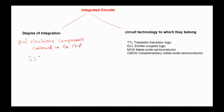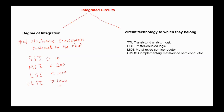In small-scale integrated circuits, the number is about 10. In medium-scale integrated circuits, less than 200. In large-scale integrated circuits, about 1,000. And in very large-scale integrated circuits, more than 1,000 — the number may reach 100,000 or even millions of electronic components in the chip.